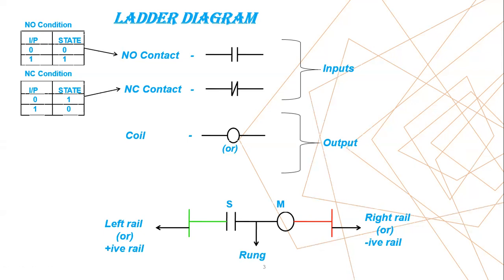So each line in ladder diagram we call it as rung. So if you say line one, line two, in ladder diagram we have to use the term rung one, rung two, rung three like that. And each symbol has its own address.